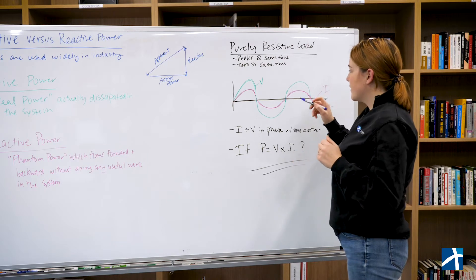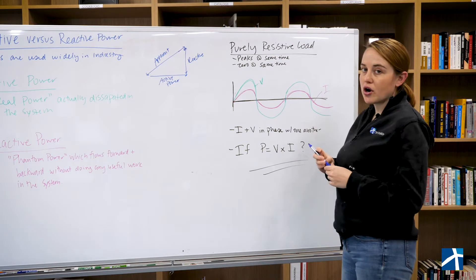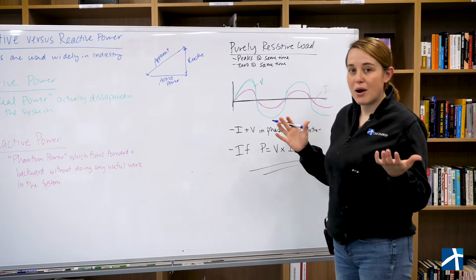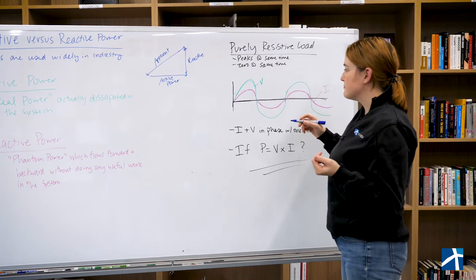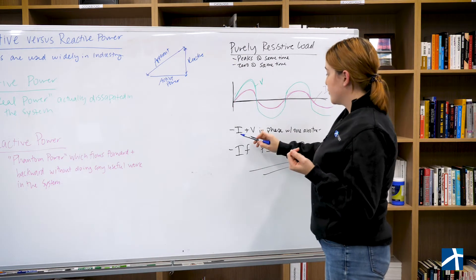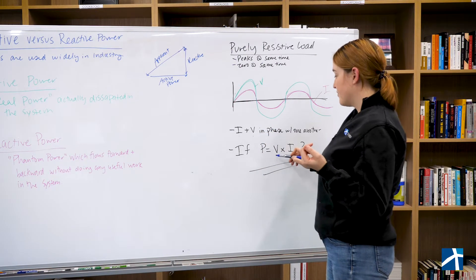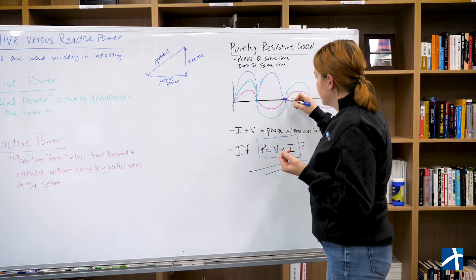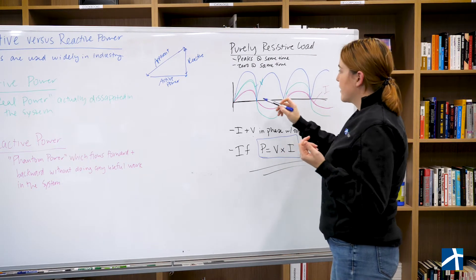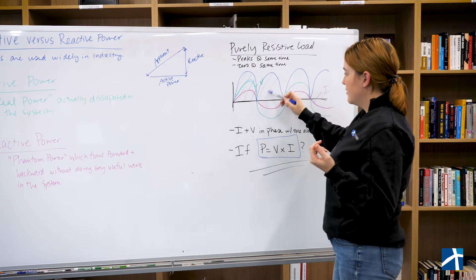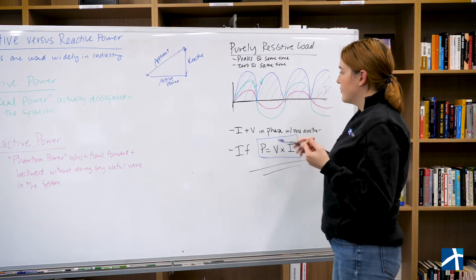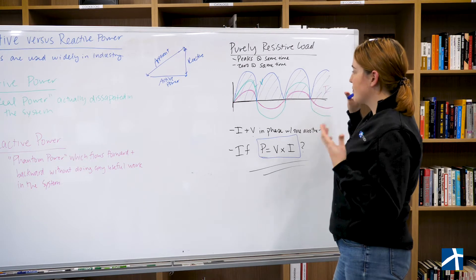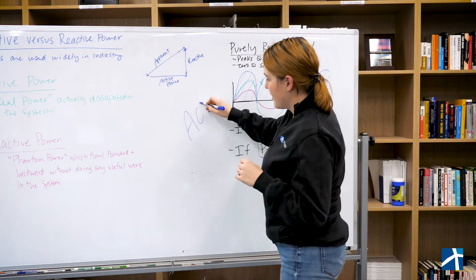And so what that means is that voltage and current are in phase with one another in a purely resistive load. So now what if we're looking at power? Now what happens when you look at power? So you're going to take your current and multiply it by your voltage to get power. So what that's going to look like, you're going to have positive power, as in a purely resistive load. And so this type of representation we call active power.